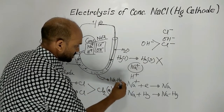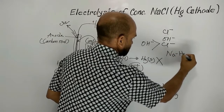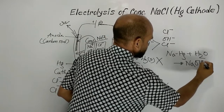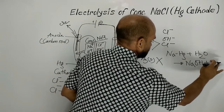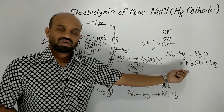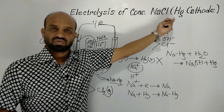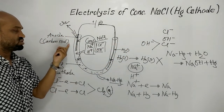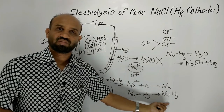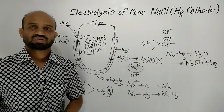This sodium mercury amalgam is taken out and treated with water to form an important reagent — sodium hydroxide — along with sodium chloride. Mercury is then separated and recycled. So from the electrolysis of concentrated sodium chloride solution with mercury as cathode, chlorine is obtained at the anode, and sodium mercury amalgam is obtained at the cathode, from which sodium hydroxide can be prepared.